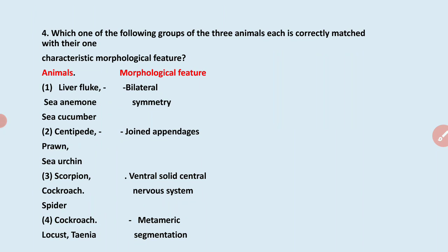Next: which one of the following groups of three animals is correctly matched with their morphological features? First option — liver fluke, sea anemone, sea cucumber with bilateral symmetry. Liver fluke is a platyhelminth. Sea anemone (Metridium) is a poriferan-type, and sea cucumber (Holothuria) is an echinoderm — they don't all have bilateral symmetry. Sea anemone is cylindrical and does not have bilateral symmetry, so this option is incorrect.